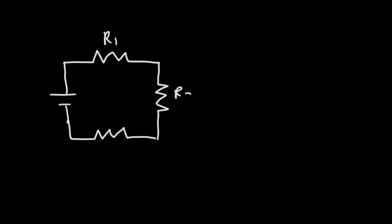Let's try another example with three resistors instead of two. We'll call them R1, R2, and R3. The voltage of the battery is 36 volts. R1 has a value of 5 ohms, R2 is 4 ohms, and R3 is 3 ohms. Calculate the voltage drop across each resistor.